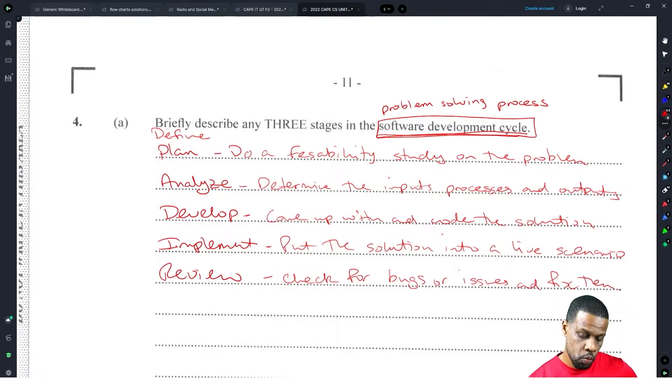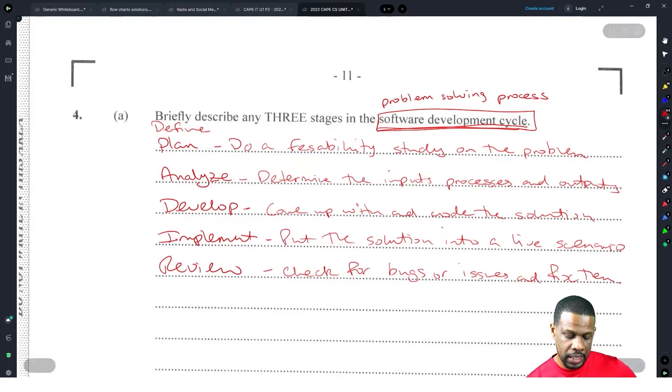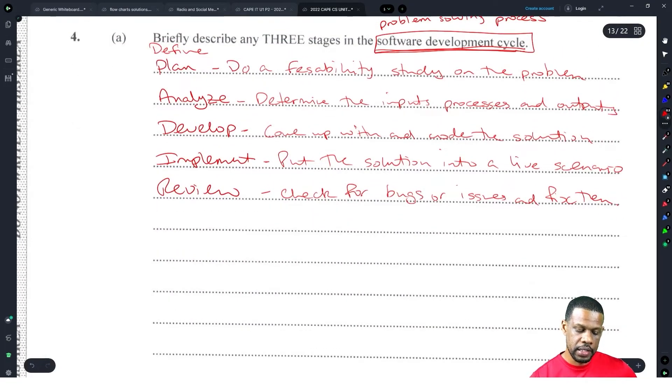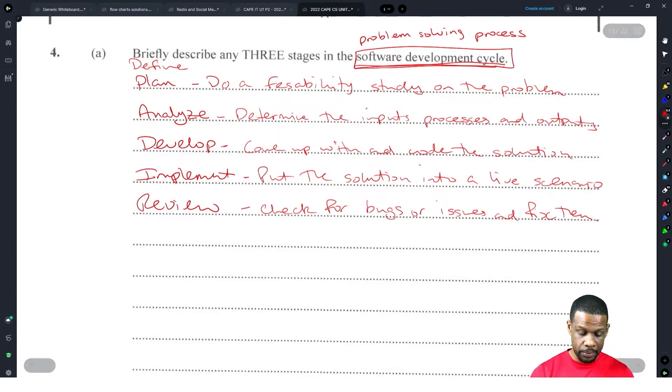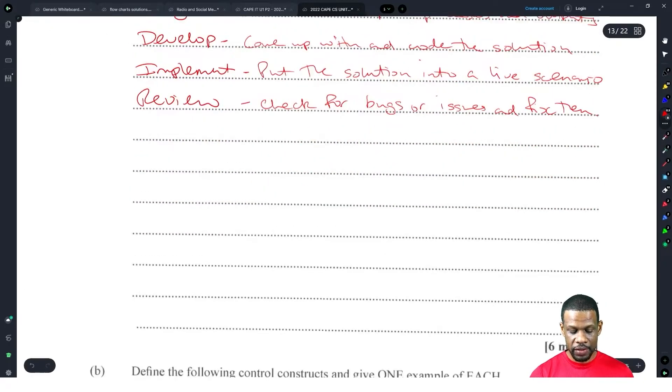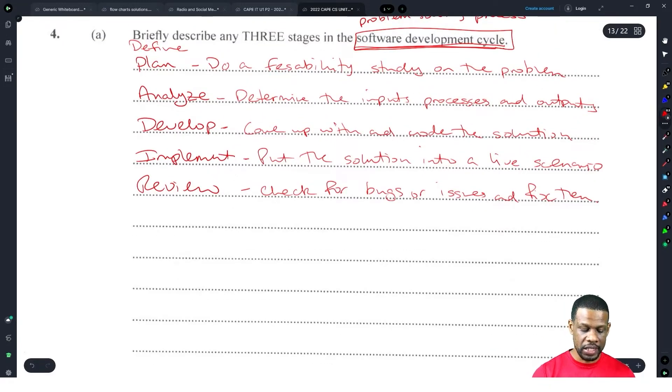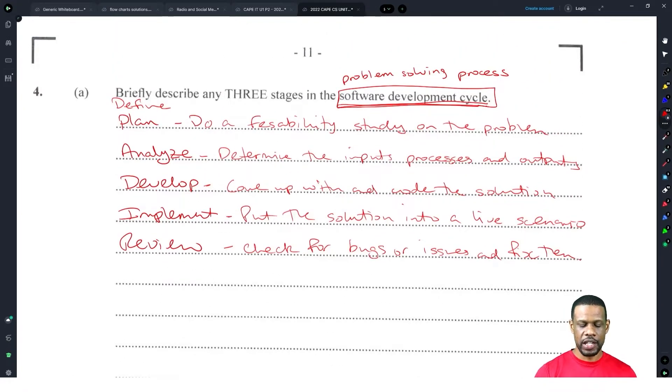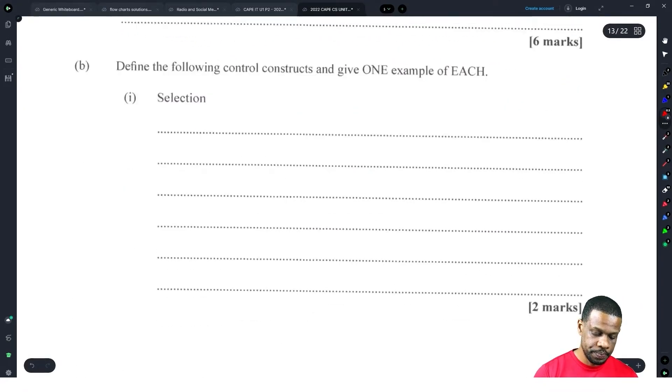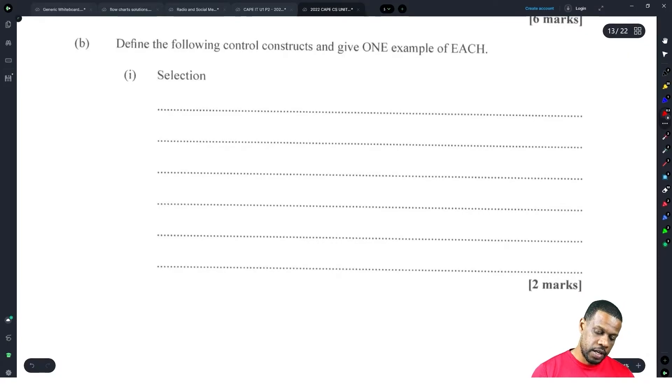Cool, yeah. Alright, so any three should be good. Your explanation there should be alright. And if you give an example, of course your life will be better. I didn't really give examples here because they give you real space to write, so they're really looking for you to give some nice little examples and things and whatnot. Six marks, two marks to each one. Once you can name it and define it properly, you should be good. Alright, define the following control structures and give one example of each. Wow, there's a question I'm asking my form three students right now.